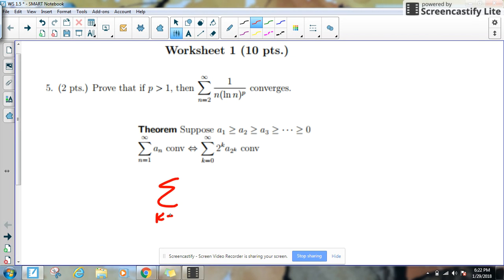We're going to start at 1, and we're going to go to infinity. And it's going to be 1 over 2 raised to the k times the natural log of 2 raised to the k, all that raised to the p, times by another 2 to the k.